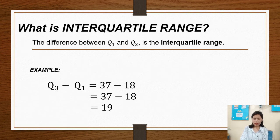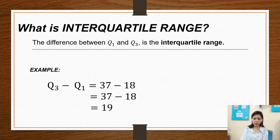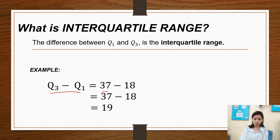What is interquartile range? The difference between Q sub 1 and Q sub 3 is the interquartile range. Example: Q sub 3 minus Q sub 1. The value for Q sub 3 is 37 minus 18 for the value of Q sub 1. So 37 minus 18 equals 19. So that is the interquartile range.